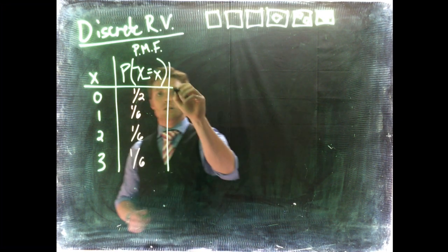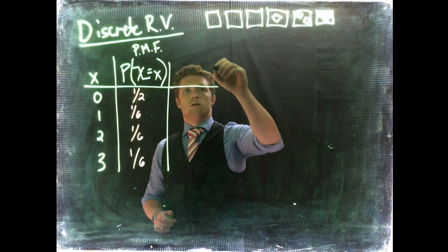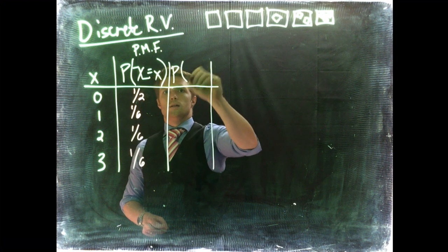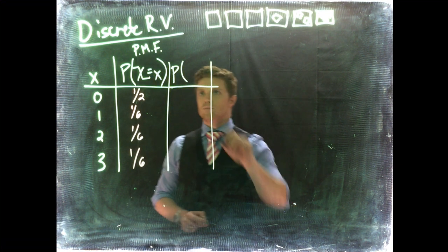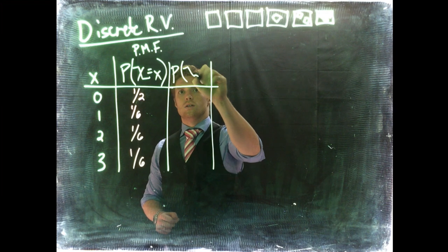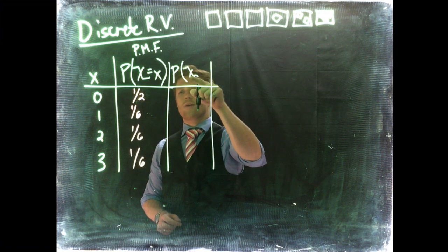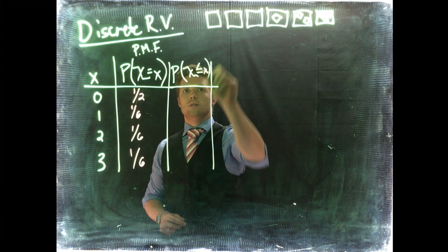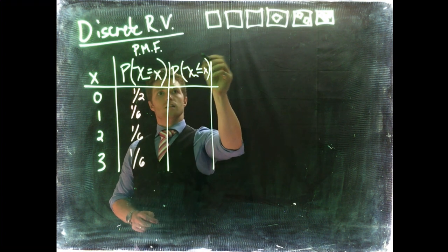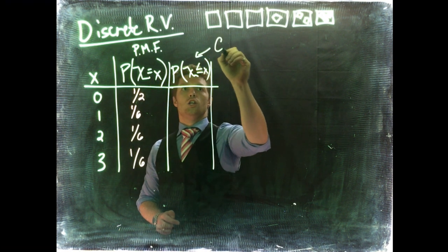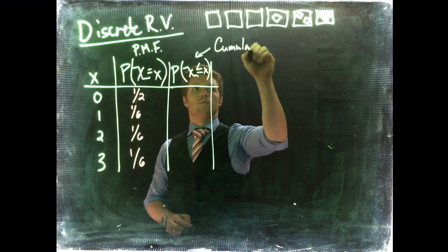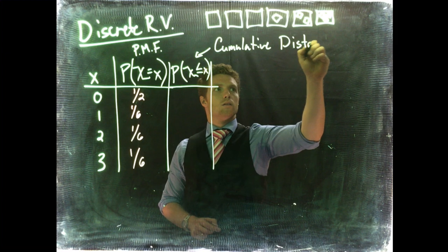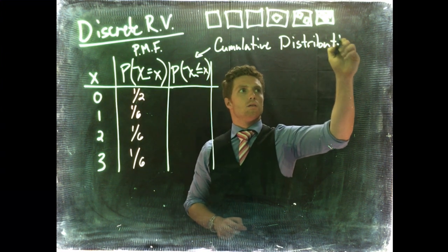Now we can also include what's known as our cumulative distribution function. So this is x, this is our discrete random variable capital X, is going to be less than or equal to little x. And this is our cumulative distribution function.